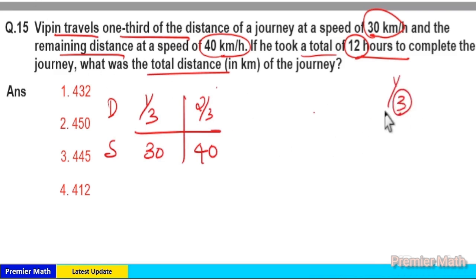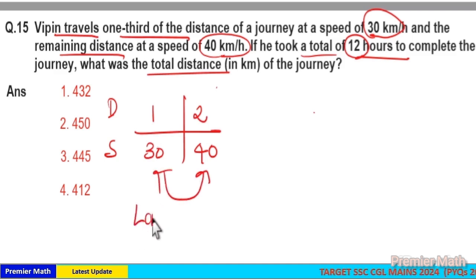Now distances are not equal, so in that case take the LCM of the speeds, that is 30 and 40. The LCM of 30 and 40 is equal to 120.